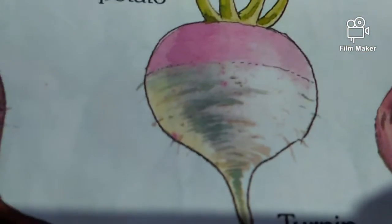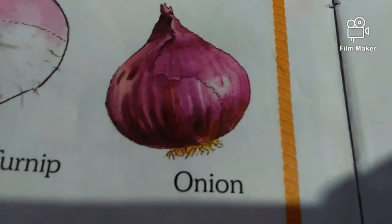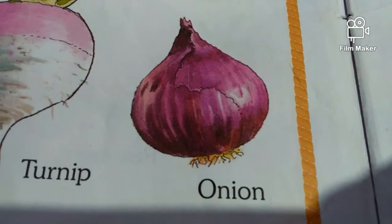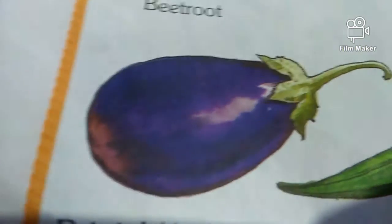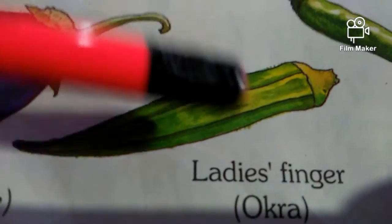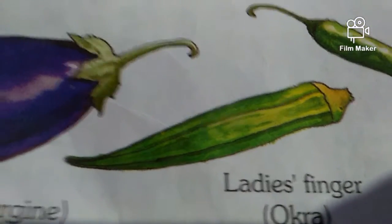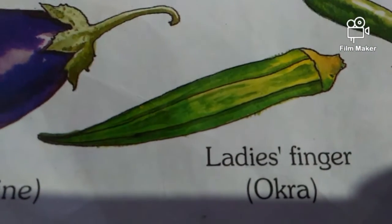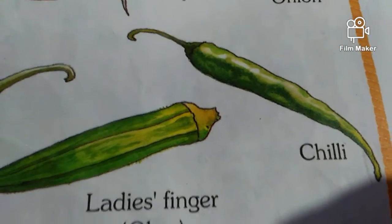Which vegetable is this? This is turnip. Very good. Which vegetable is this? This is onion. Very good. Which vegetable is this? This is brinjal. Very good. Which vegetable is this? This is ladyfinger. This is okra. And what is this? This is chili.